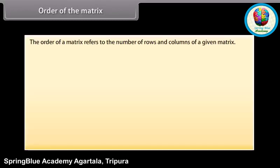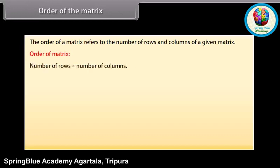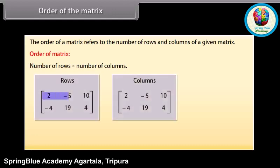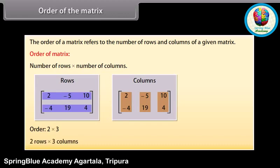Order of the matrix. The order of a matrix refers to the number of rows and columns of a given matrix. By convention, the order of a matrix is given by number of rows by number of columns. Here we can see two pictures of the same matrix with the rows and columns highlighted. The order of this matrix is 2 by 3, that is, 2 rows by 3 columns.